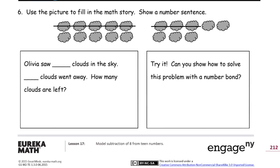Use the picture to fill in the math story and show a number sentence. Looks like we have a 10 group on the first row, and then we have 8 on the bottom row. So 10 and 8 is 18. So 18 clouds in the sky.